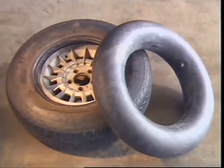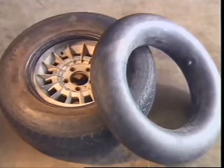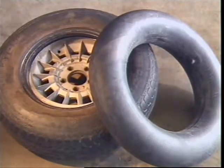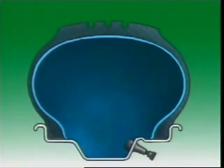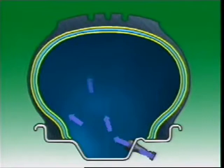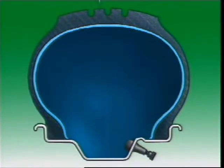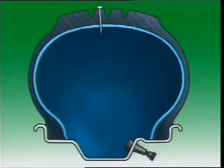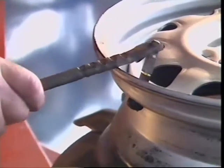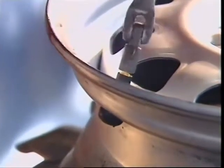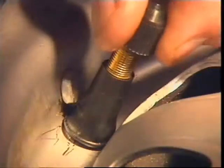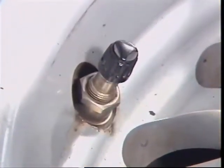A tube-type tyre uses an inner tube which provides an airtight container inside the tyre. A tubeless tyre is lined with a soft rubber layer to form an airtight seal. This inner liner also seals against small penetrations, letting air escape only relatively slowly. When a tubeless tyre is fitted, an airtight valve assembly is used — it can be a tight fit into the rim or be held with a nut and sealing washers.